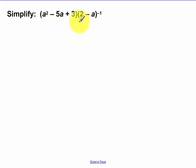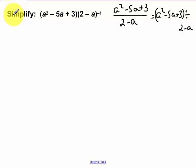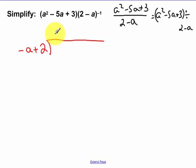Now a different example. This really means a squared minus 5a plus 3 — remember negative exponents go in the denominator — so I have 2 minus a, which is the same thing as a squared minus 5a plus 3 divided by 2 minus a. We'll divide using long division. The negative a plus 2 goes out in front — notice how I switched the location so the variable is out in front — and then I have a squared minus 5a plus 3.